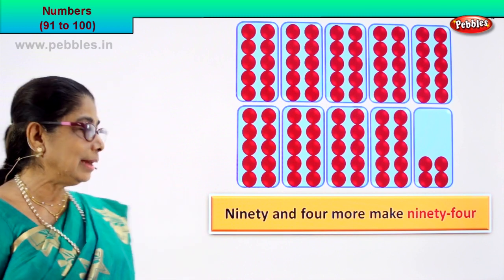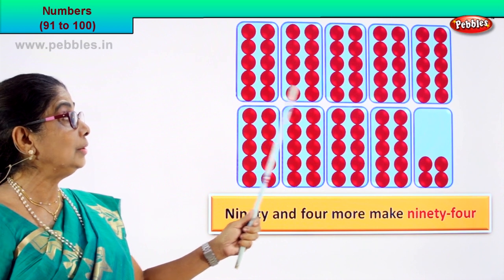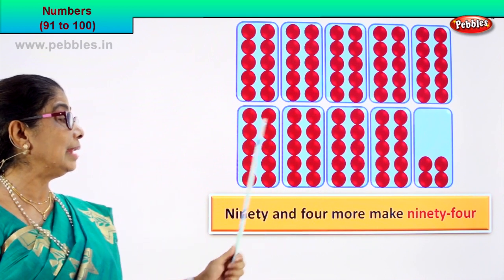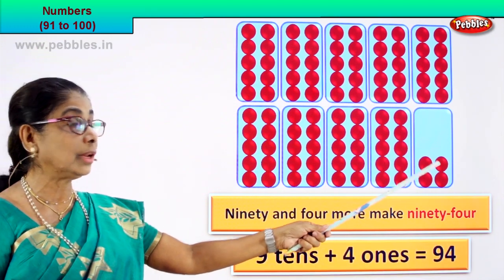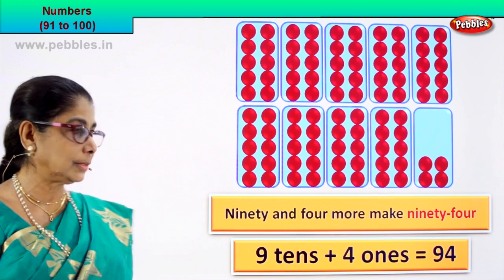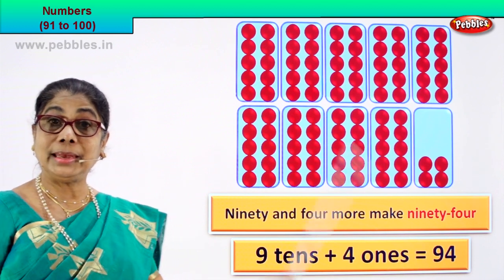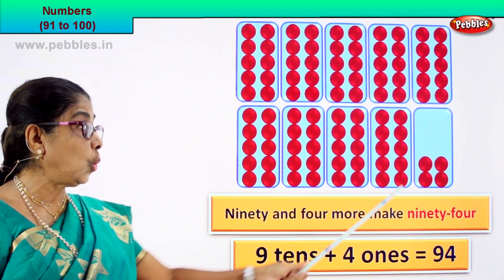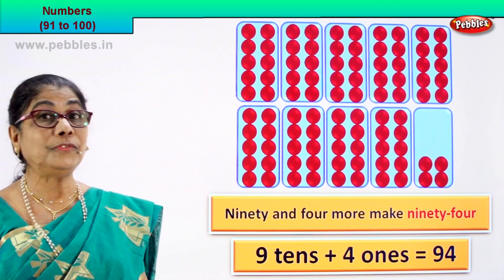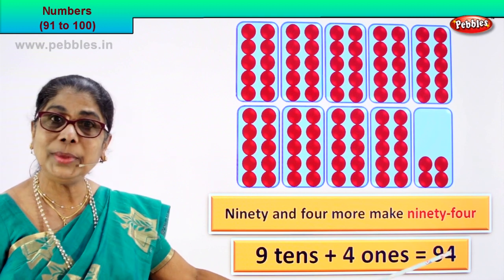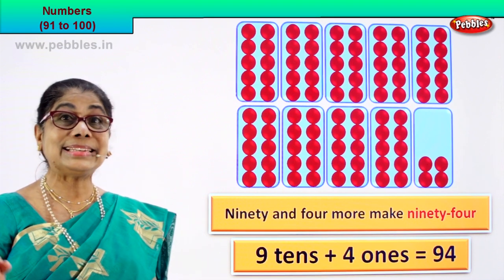What is 90? 90 is nine tens. There are nine tens, and here in the ones place we have 1, 2, 3, 4 — four ones. So nine tens plus four ones equal to 94. The numeral is 94. How do we write the number name? 94. What is nine tens plus four ones? 94.